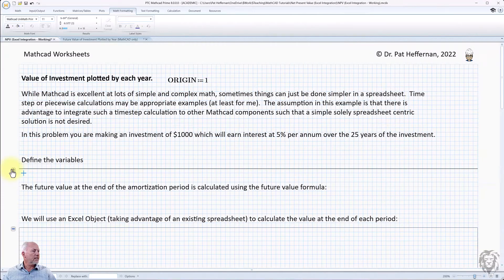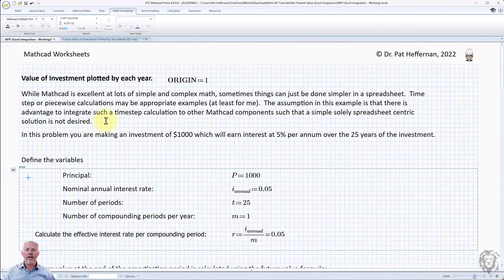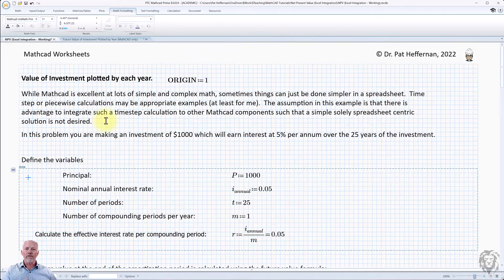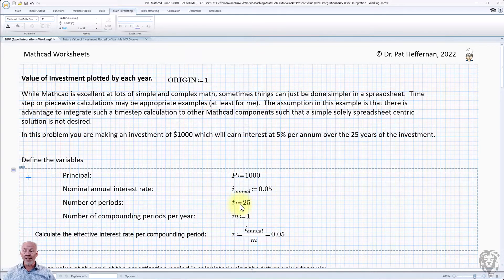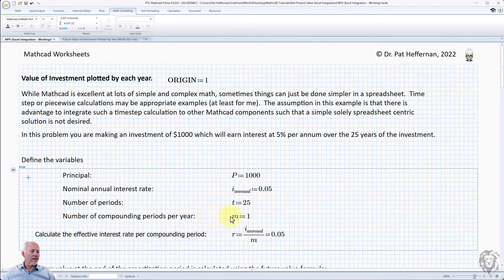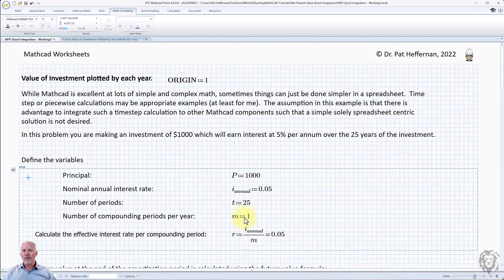So the first thing is defining the variables. I've gone ahead and drawn from the problem sheet itself what those variables are, and I've defined them here. So we have a principle of a thousand dollars. We have an annual interest rate of 5%. The number of years of the investment is 25 years. And the number of compounding periods, M, is equal to one. So it's only compounding once a year.